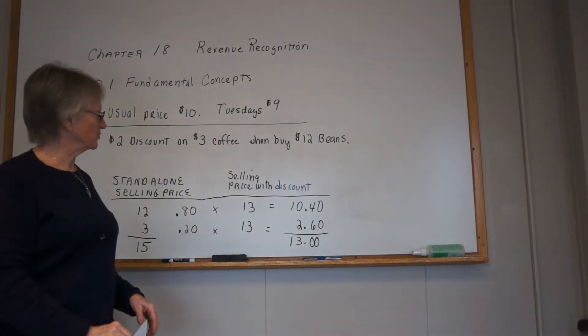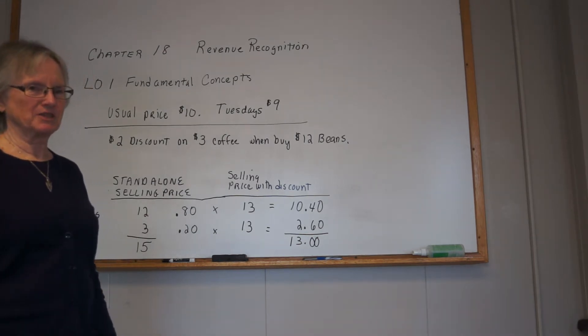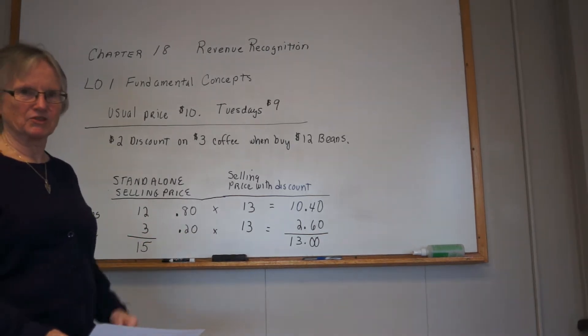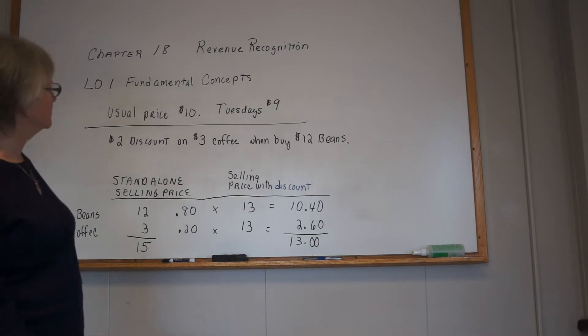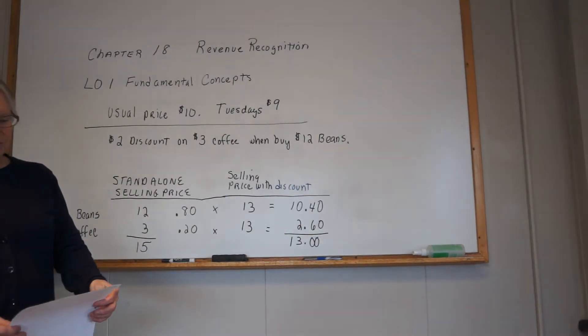We're still on learning objective one, but now we are on step three: determining the transaction price. We also throw in the allocation step and the recognizing step for no extra charge. So the example that they use...